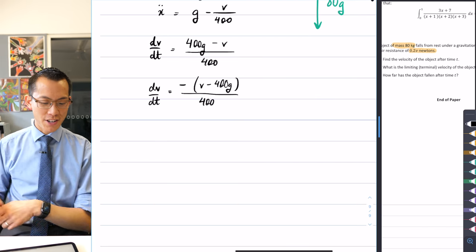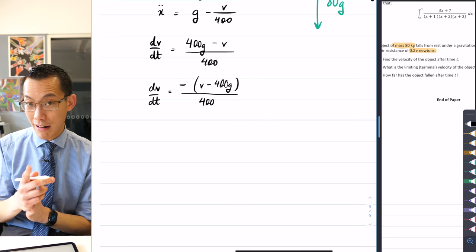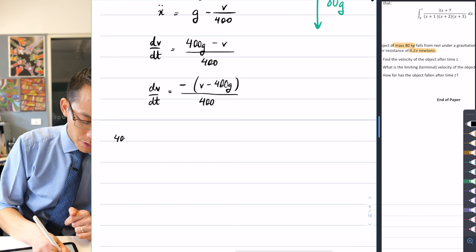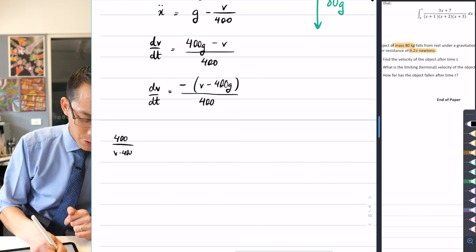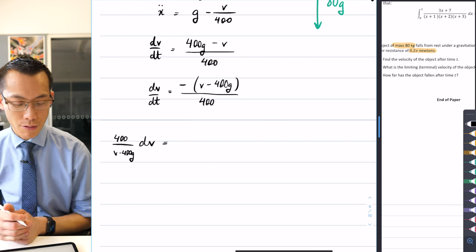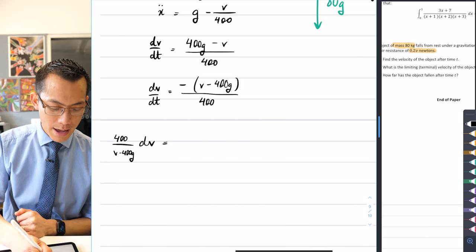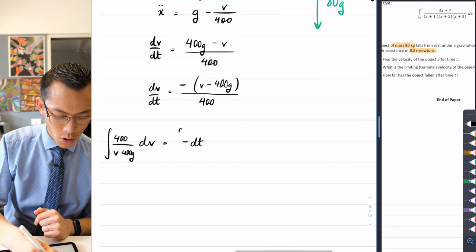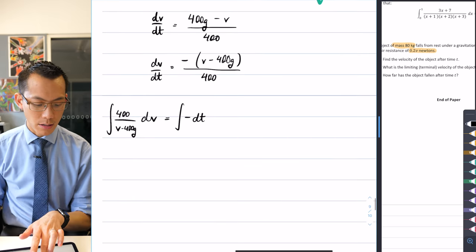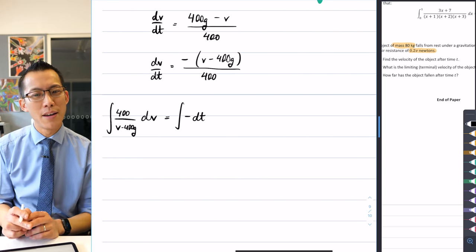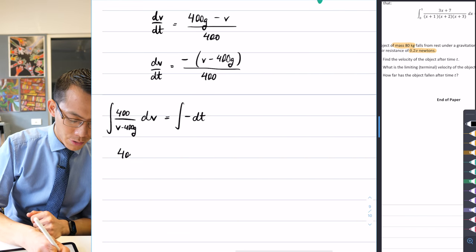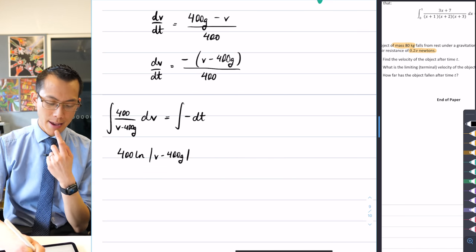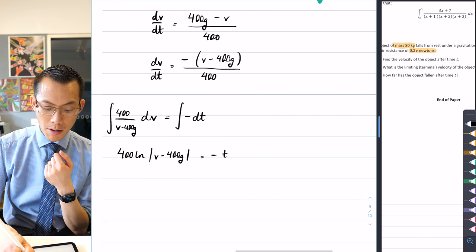All right, so let's do our separation. I'm going to get all my v's on the left, all my t's on the right, and then I'm going to integrate in one hit. So I'm going to go 400 over v minus 400g dv. I've divided through by everything on this side, it's ready to go, and then I've got this minus sign still hanging around and a dt. And as promised, I'm going to integrate everything all in one go. So I've got an integral on the left with respect to v, integral on the right with respect to t, and this is not complicated. I've set this up so it's quite nice. I can say this is going to be 400 log of v minus 400g on the left-hand side, and then minus dt integrates up into minus t plus a constant.